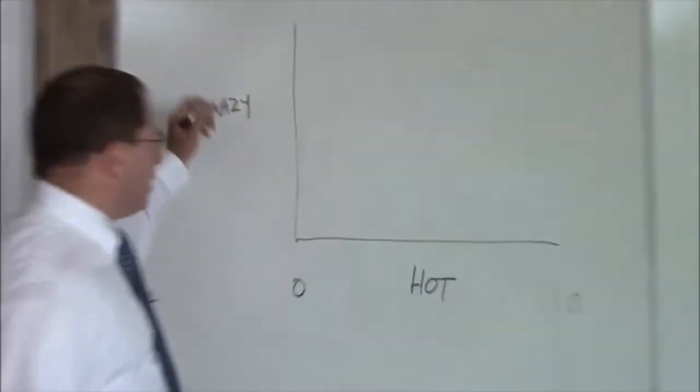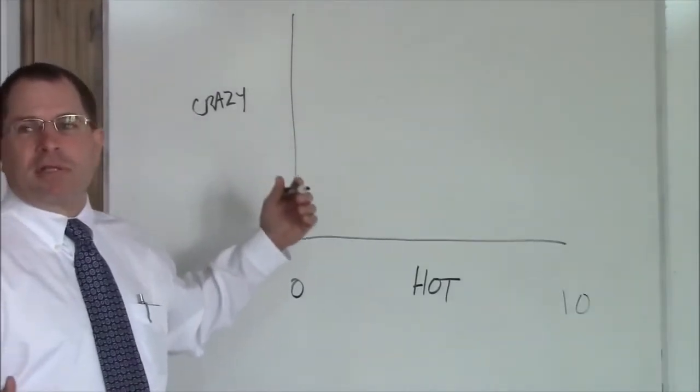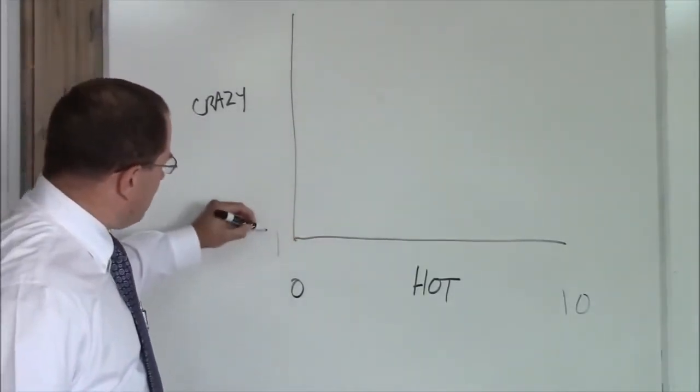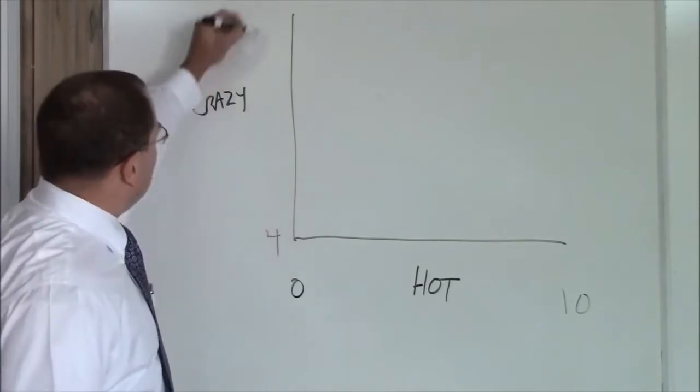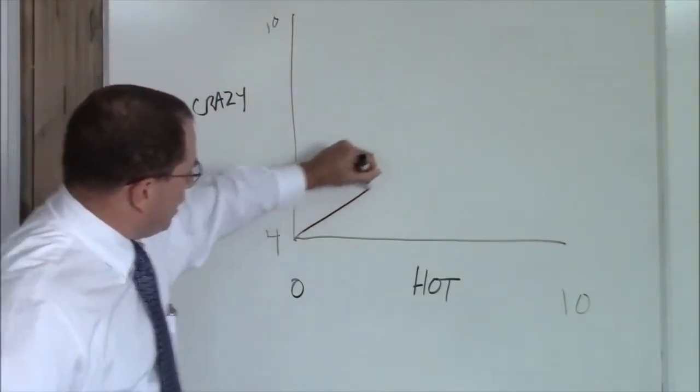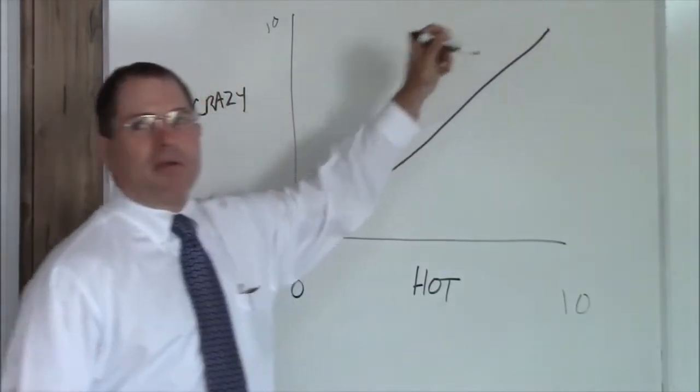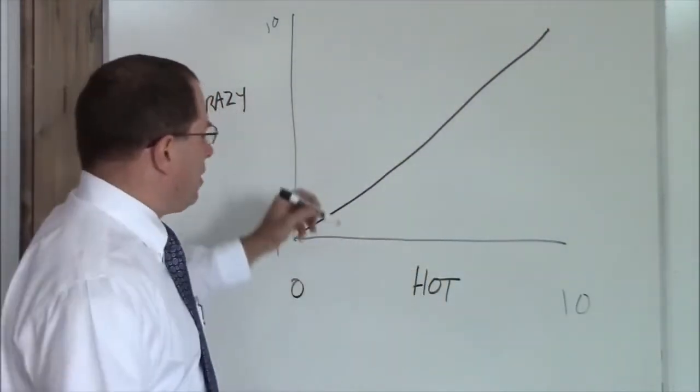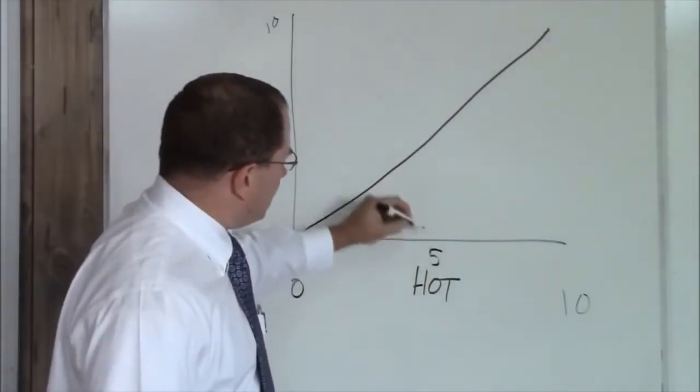Crazy is measured from four to ten because of course there's no such thing as a woman who's not at least a four crazy. So you got four to ten. This is your hot crazy line right here. Very important that you keep in mind where the hot crazy line is.